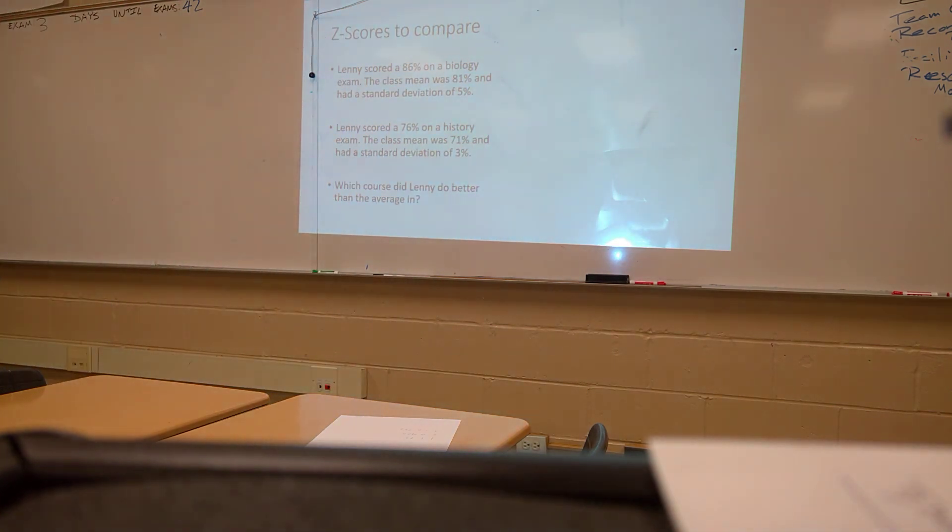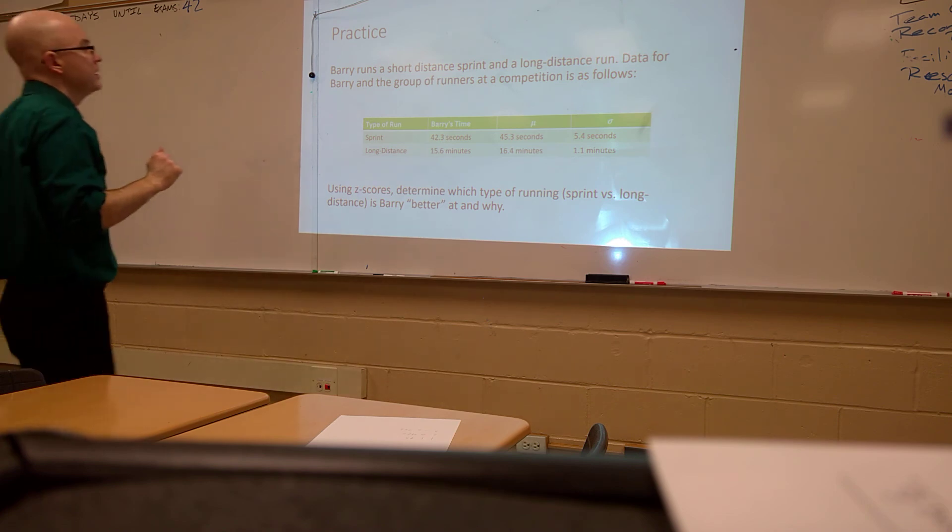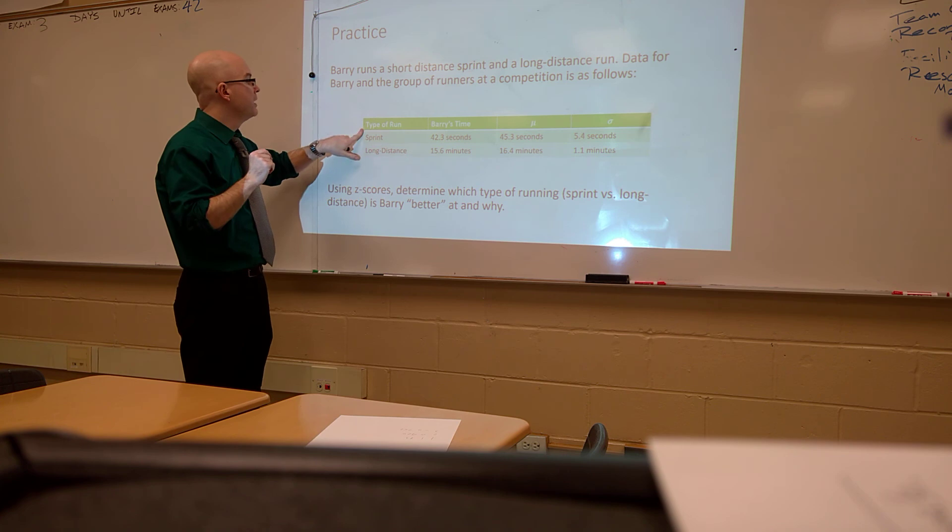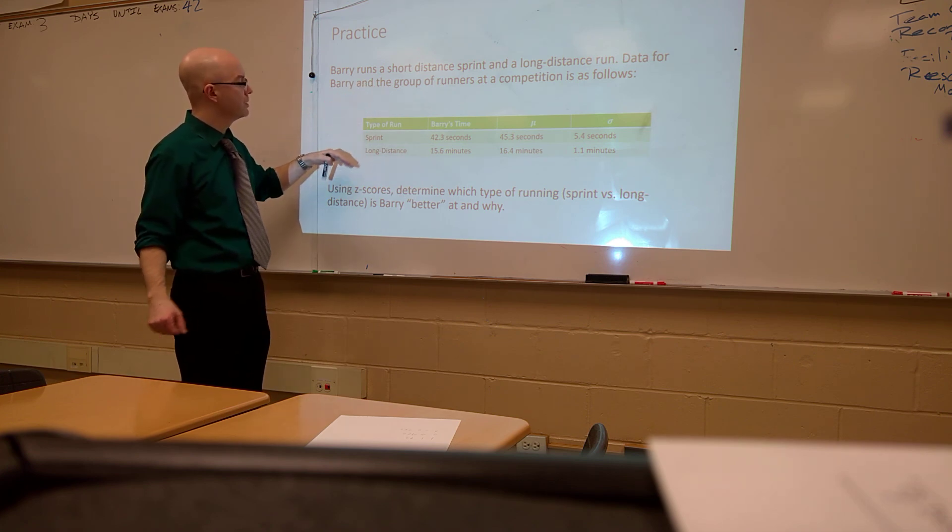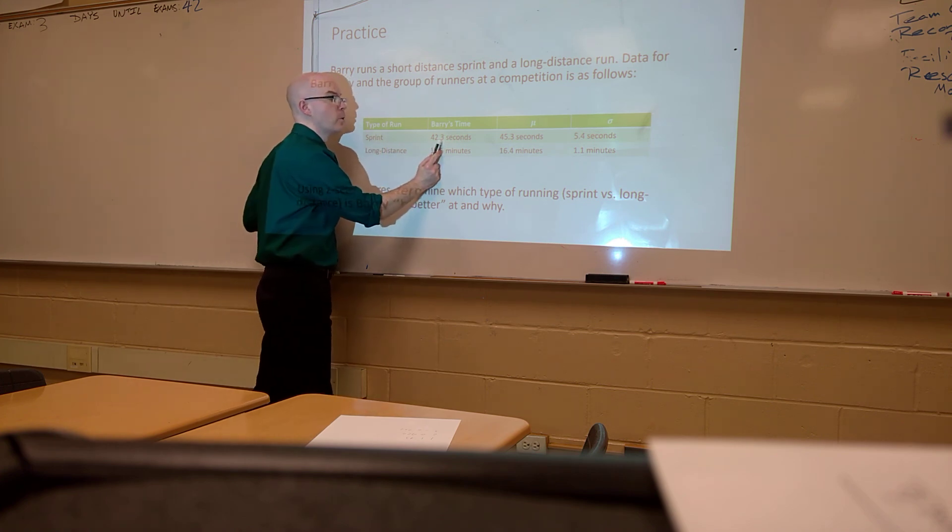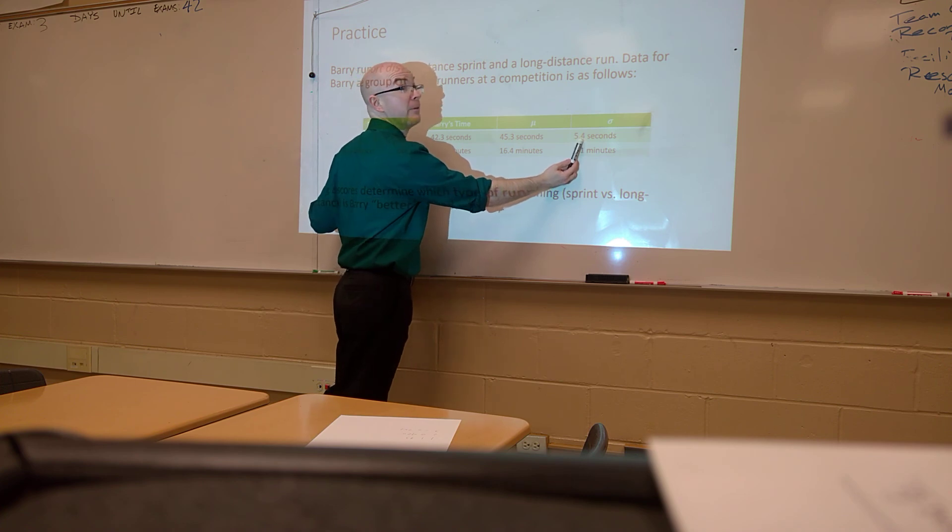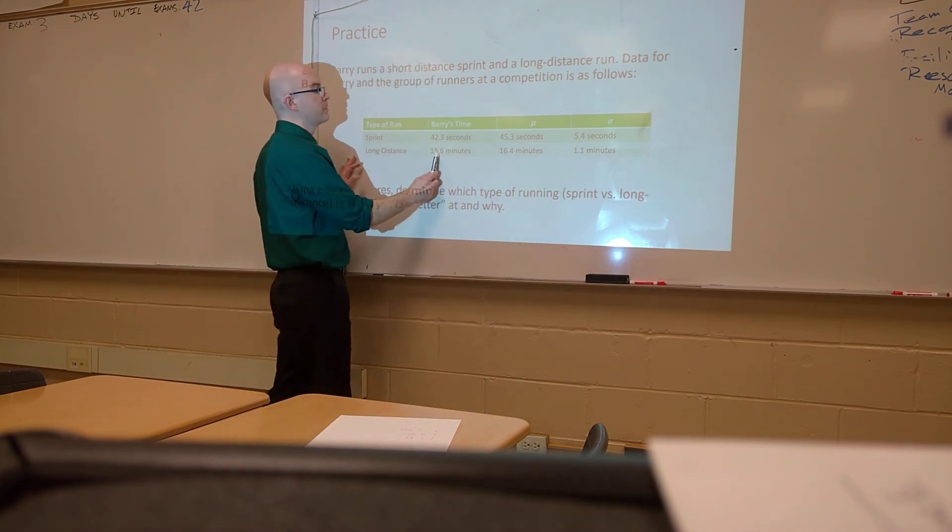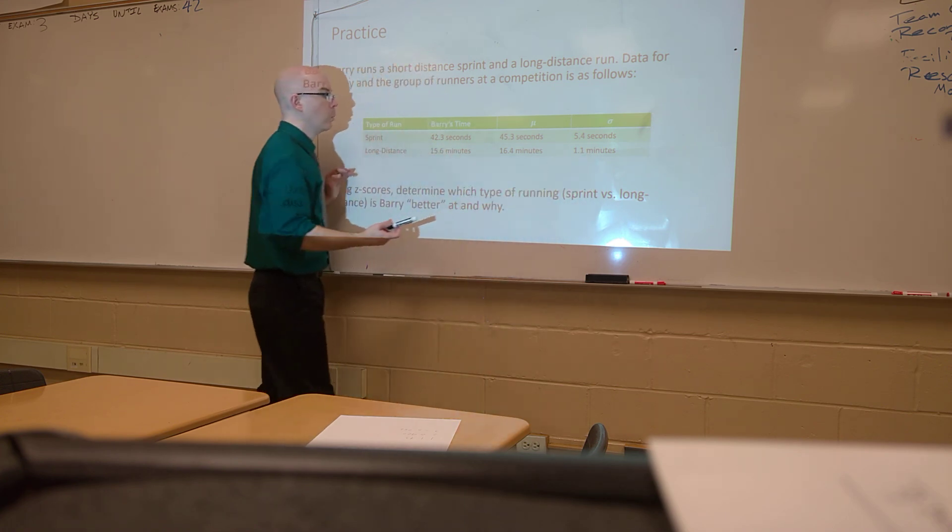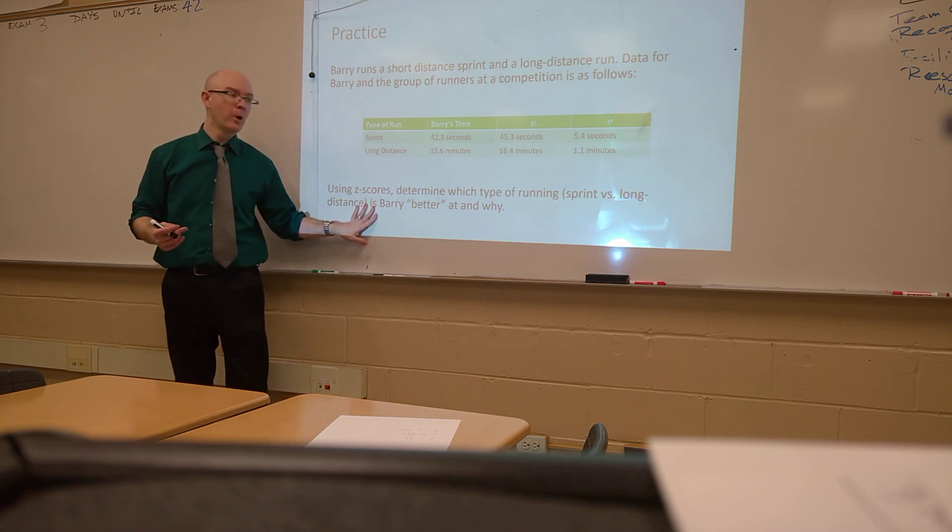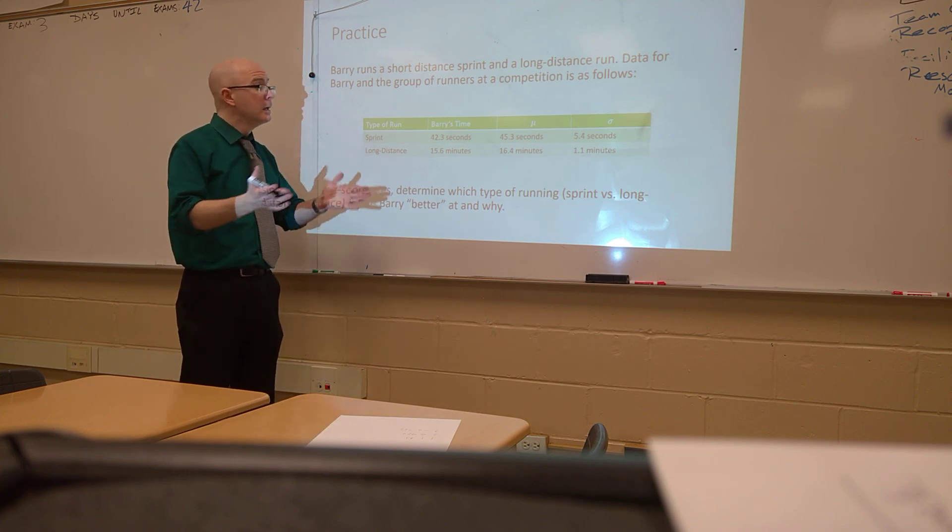So let's take a look at one more that I'd like you guys to work on. Barry runs a short-distance sprint and a long-distance run. Here's the data for Barry. I'll read this out a little bit just in case it's hard to see on your screen. In the sprint, Barry's time is 42.3 seconds. The mean for the runners is 45.3 seconds, with a standard deviation of 5.4 seconds. For the long-distance run, he runs 15.6 minutes for the race. The mean is 16.4 minutes, and the standard deviation is 1.1 minutes. Using z-scores to determine which type of running, either the sprint or the long-distance run, that Barry is better than the average at, and also why. We should be able to explain that with z-scores.